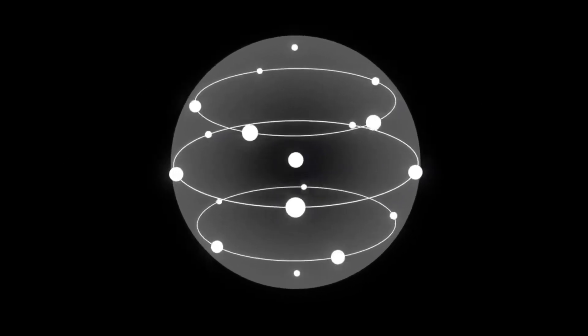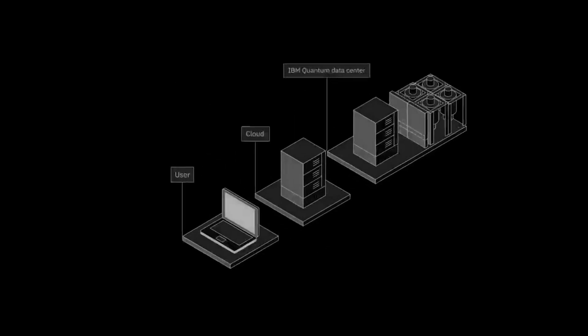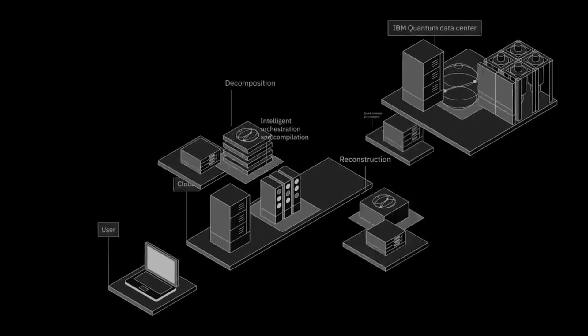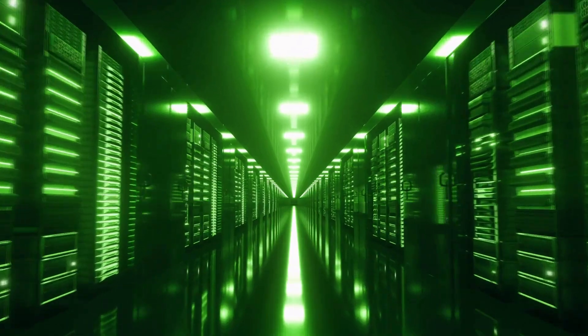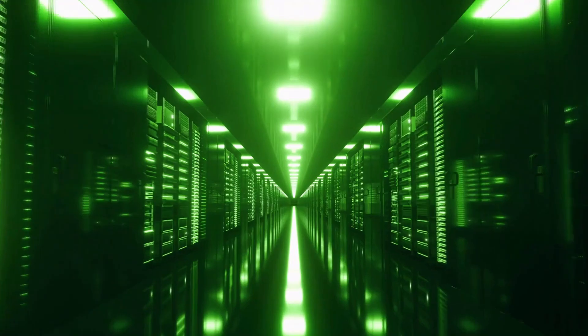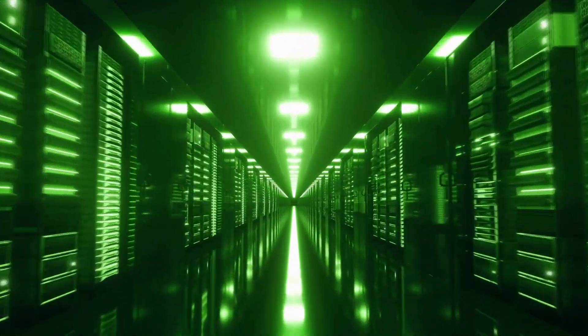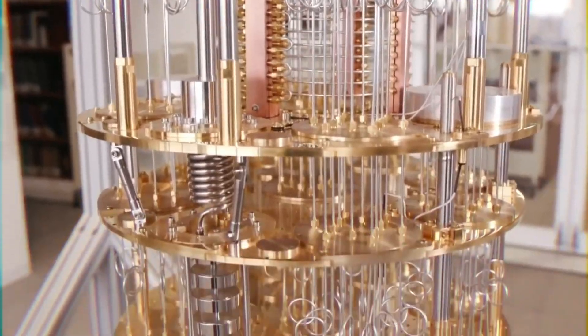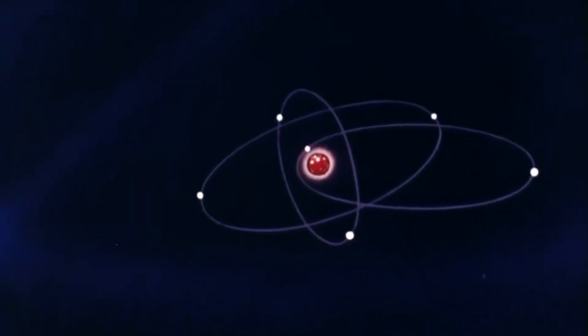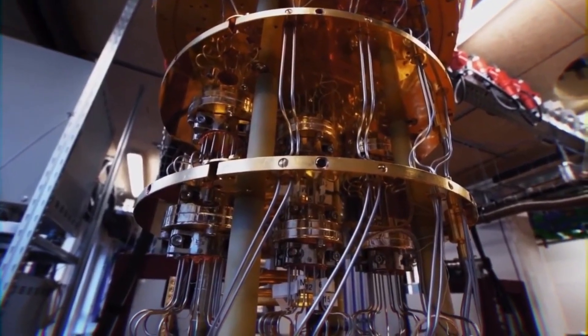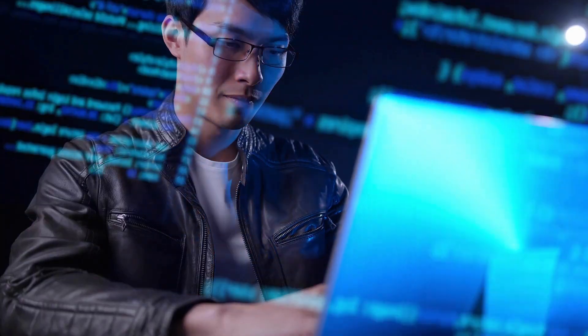In the test task, Zhu Changji used 56 qubits to solve a highly complex computational problem involving sampling output distributions of random quantum circuits. This task was considered 100 to 1000 times more complex than the one performed by Google's quantum computer, known as Sycamore, which has 54 qubits. This demonstrates the performance difference that each qubit can make in the processing capacity of a quantum supercomputer.